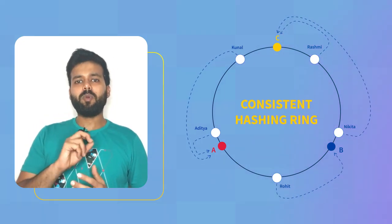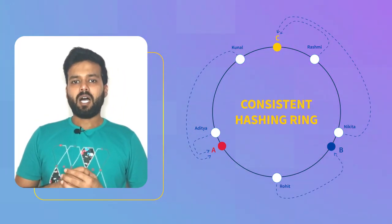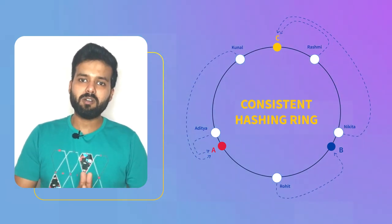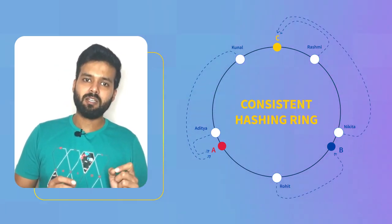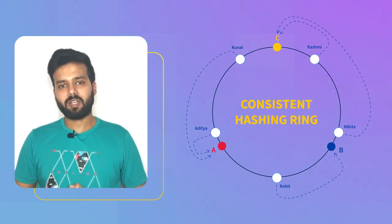Now there are two main problems with this approach. First, uneven distribution. The server which is located at the max distance in the counter clockwise direction will get the most number of requests.